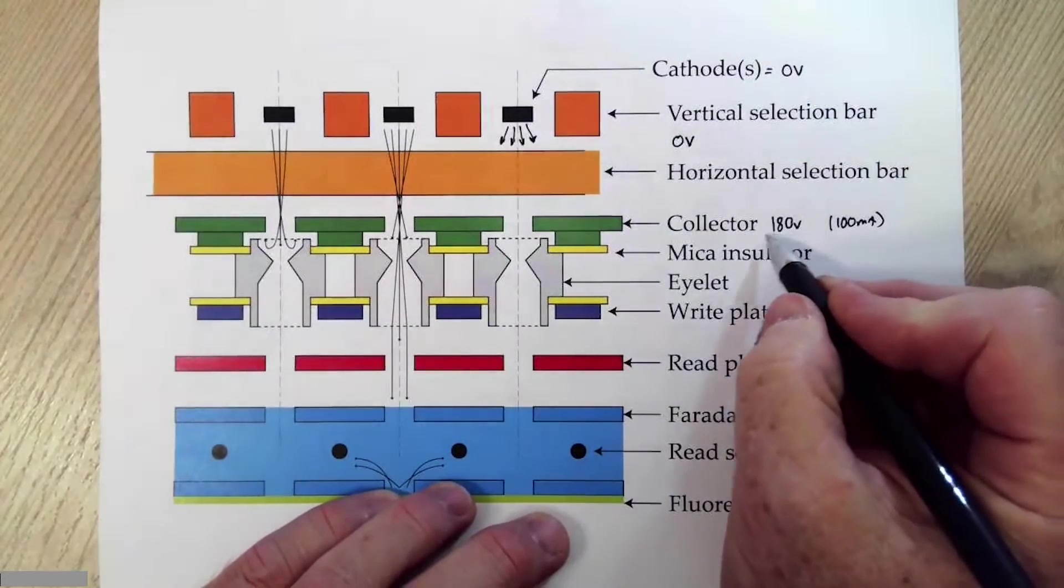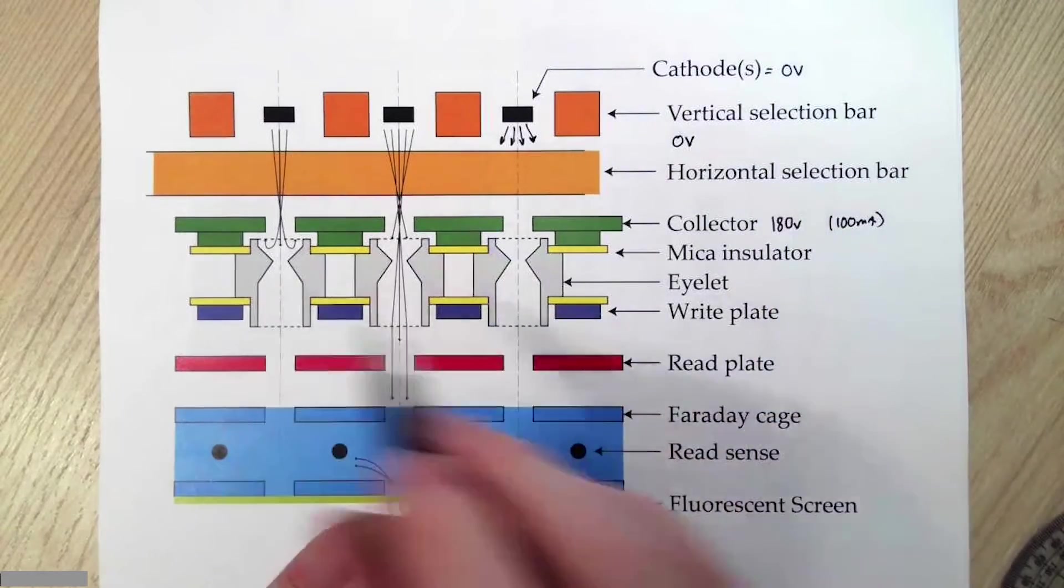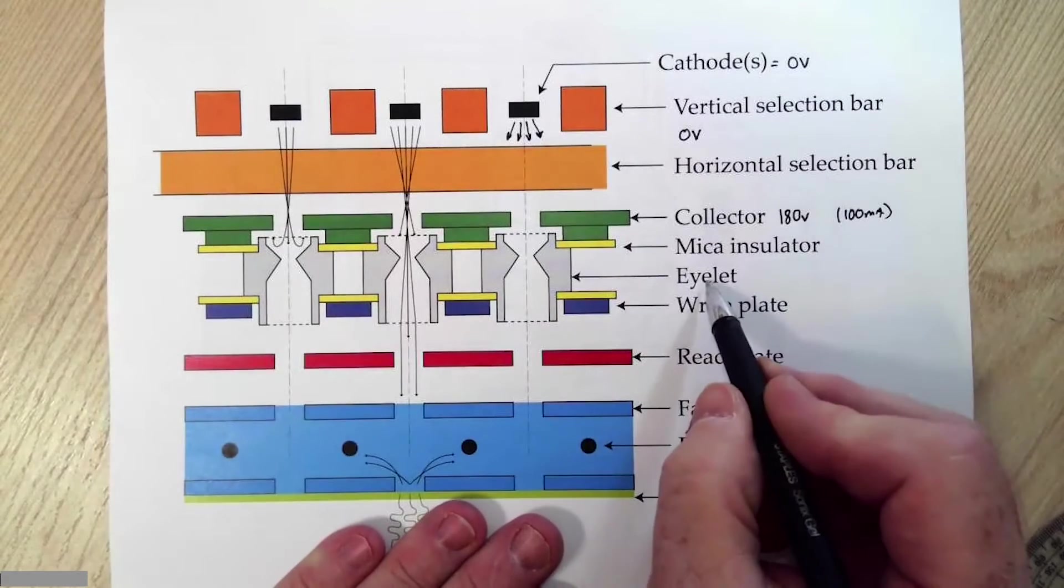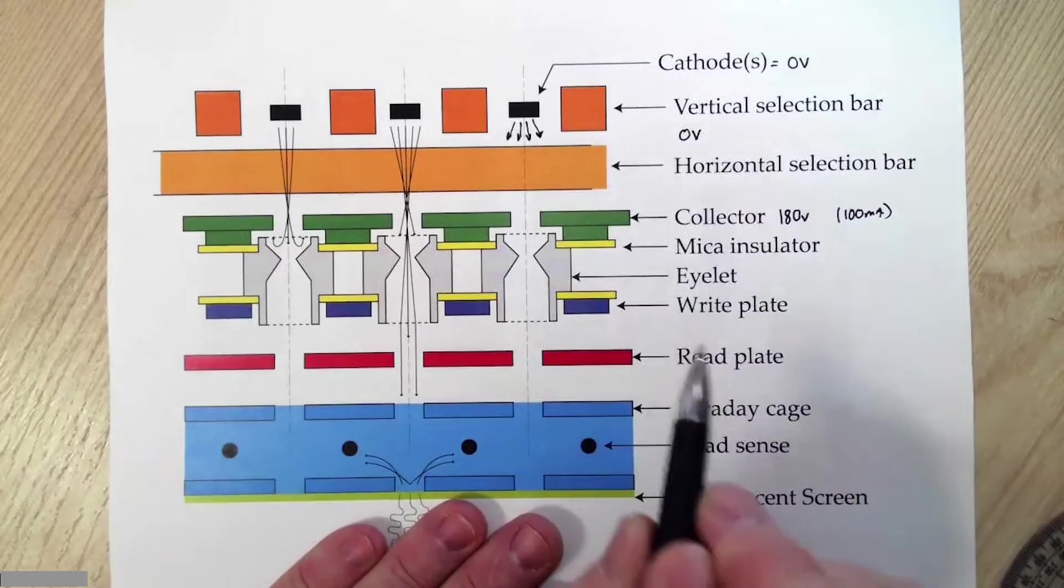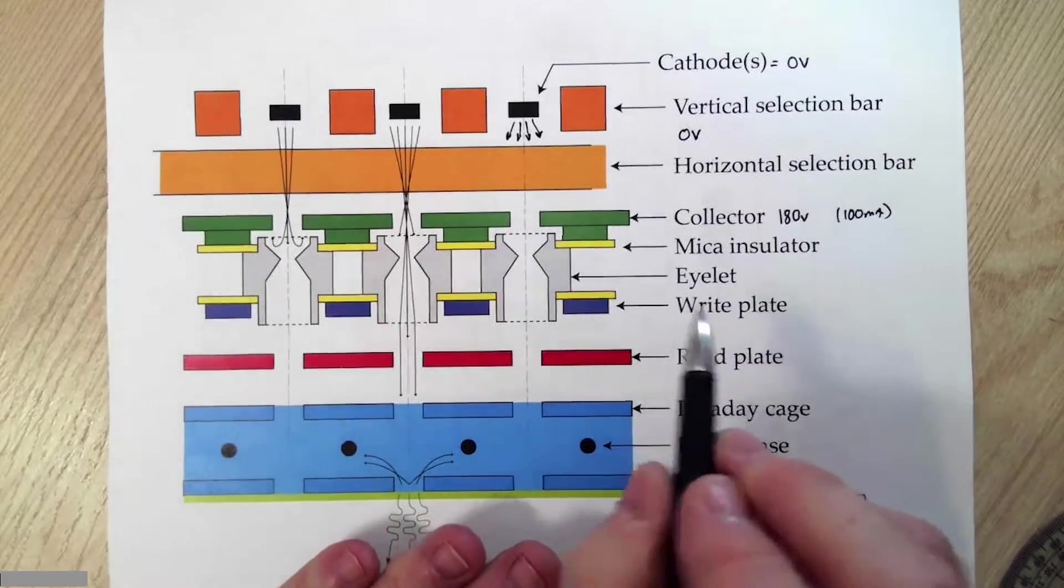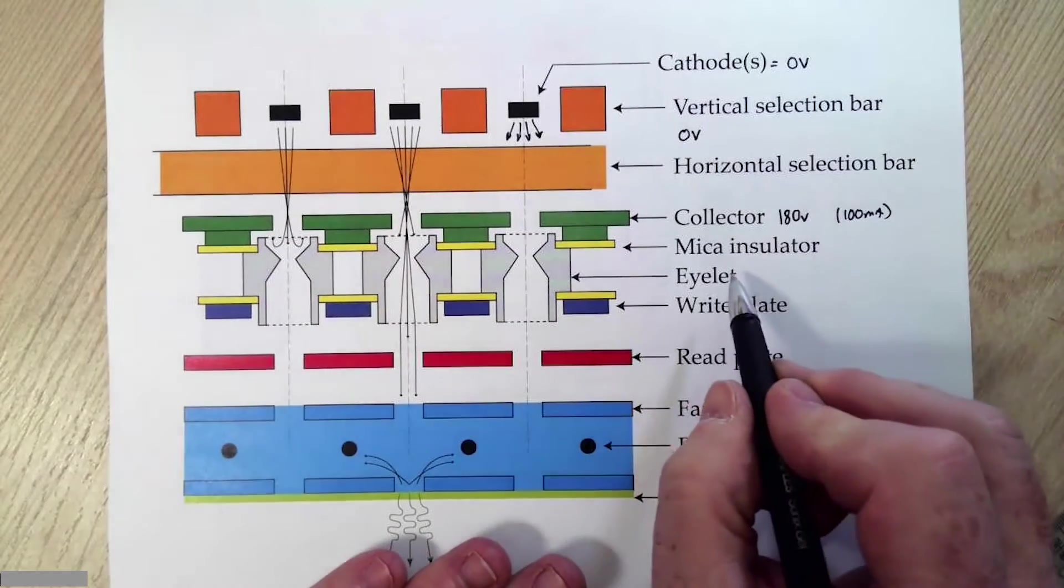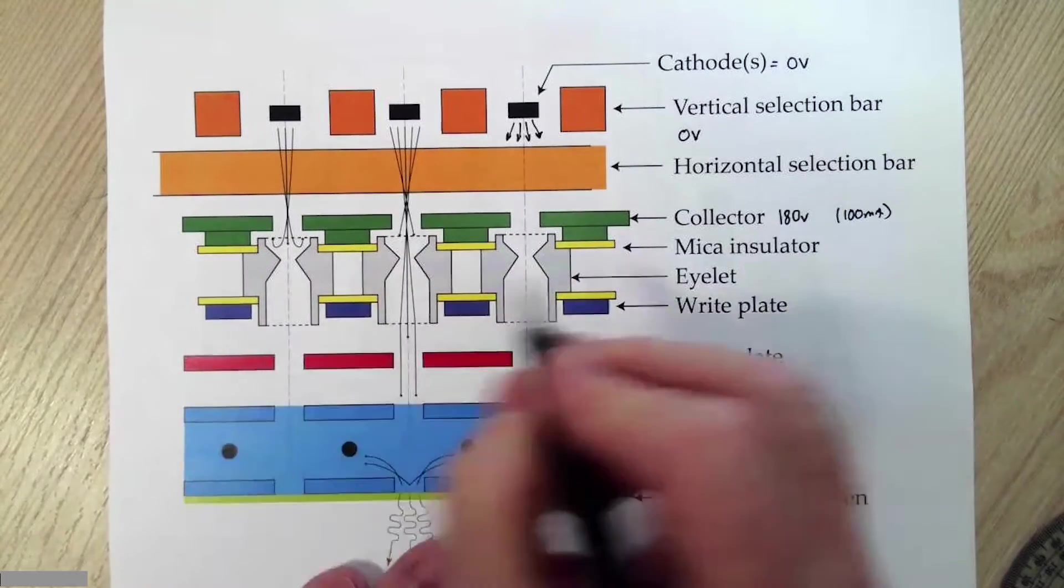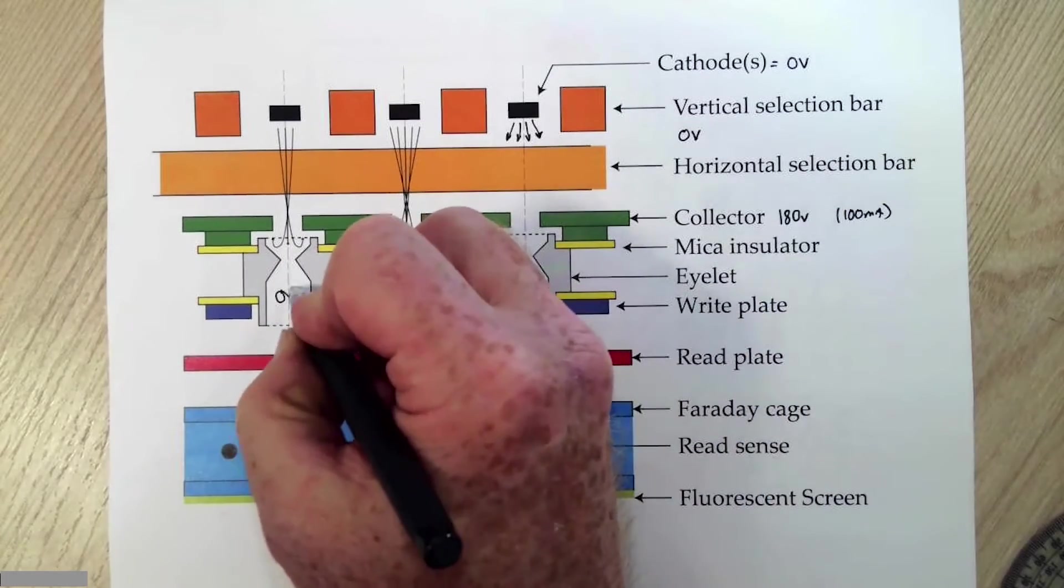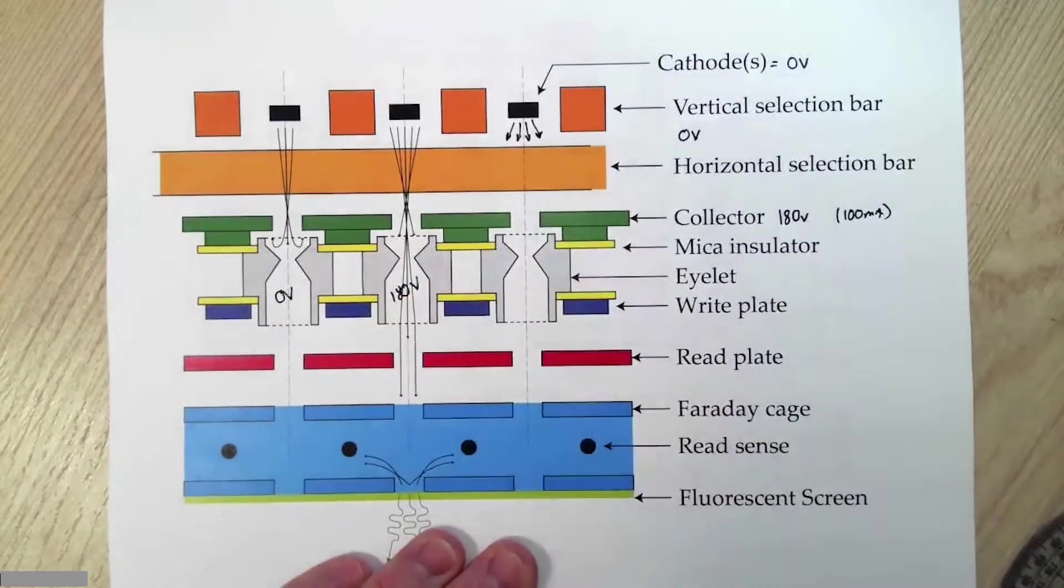Most of this current will get collected by the collector. This thing is biased at 180 volts, and I will tend to collect something on the order of 100 milliamps of current. This potential, the collector potential, sort of sets a reference for the eyelets. And again, the eyelets are electrically isolated. The eyelets will find themselves in one of two possible states.